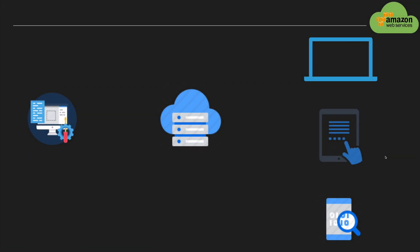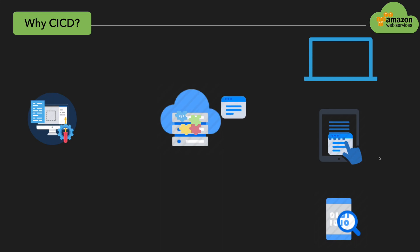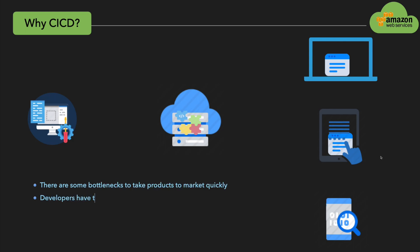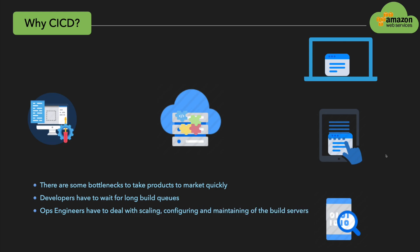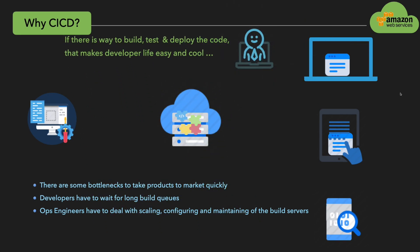Why do we need a CICD pipeline? To keep up the competition, software development teams need to be able to deliver new features with speed and agility. This includes being able to rapidly build and test the code. But there are some bottlenecks to getting products to market as quickly as possible. The developer has to wait for longer build queues, and ops engineers have to deal with scaling, configuring, and maintaining the build servers.